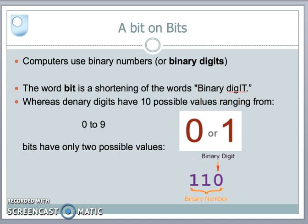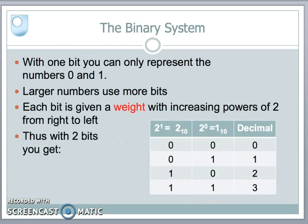In the denary world, we use 10 possible values for our counting, 0 to 9. But in the binary world, we only have two possible values, 0 and 1. So our binary numbers are made up very simply of 0 and 1. With one bit we can represent just simply 0 or 1. So if we're going to be looking at larger numbers, we're going to need more bits.